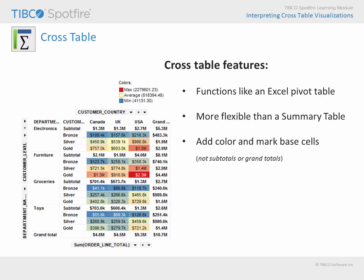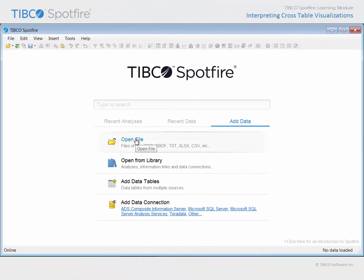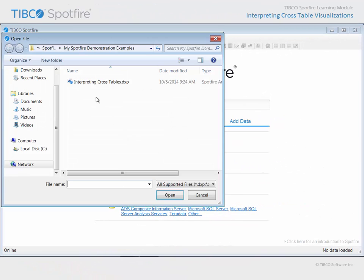For example, in this crosstable, a color gradient is applied which colors lower values blue, values near the average yellow, and high values red. Let's take a look at each of these options in a Spotfire analysis document which has been configured with several crosstables. Use Open File to navigate to the example with Interpreting Crosstables in the title.